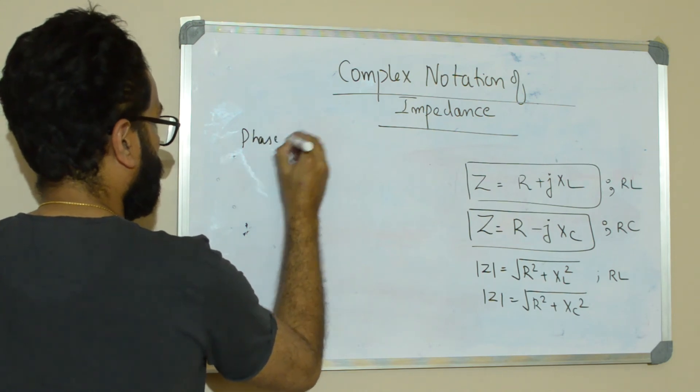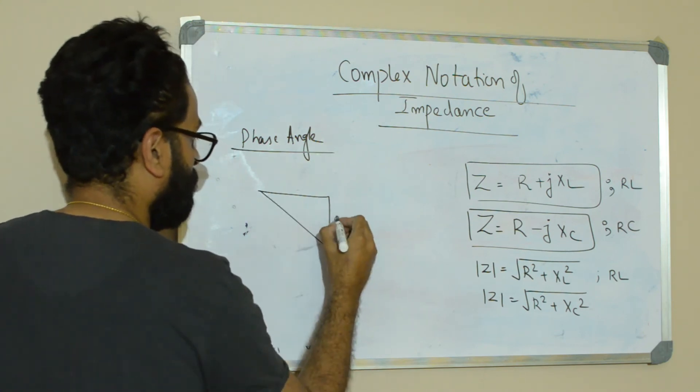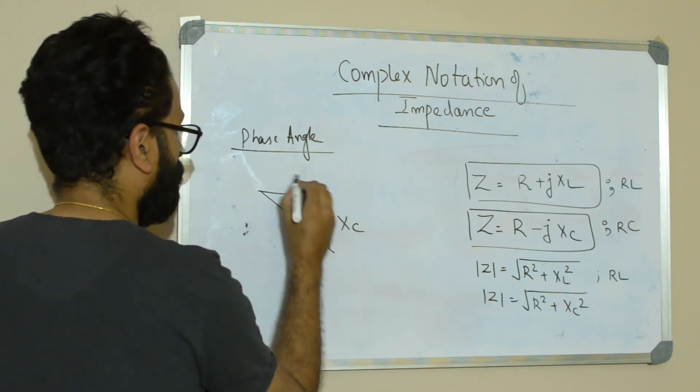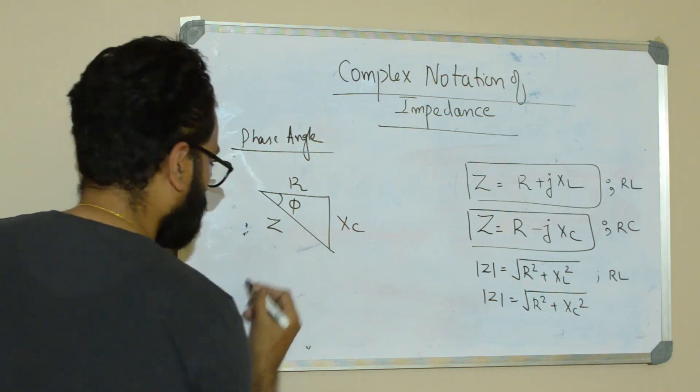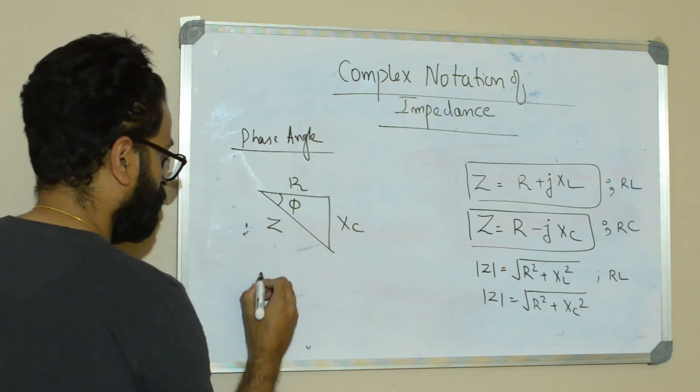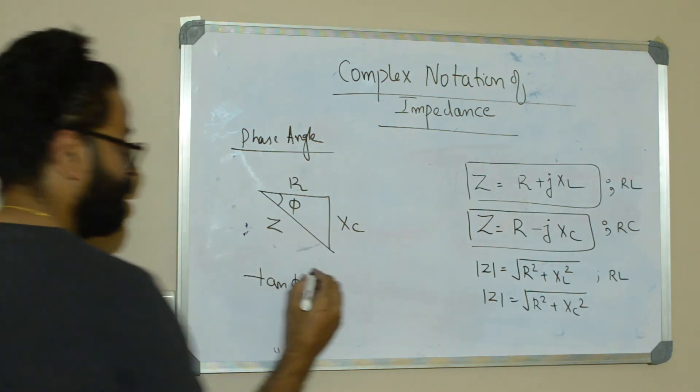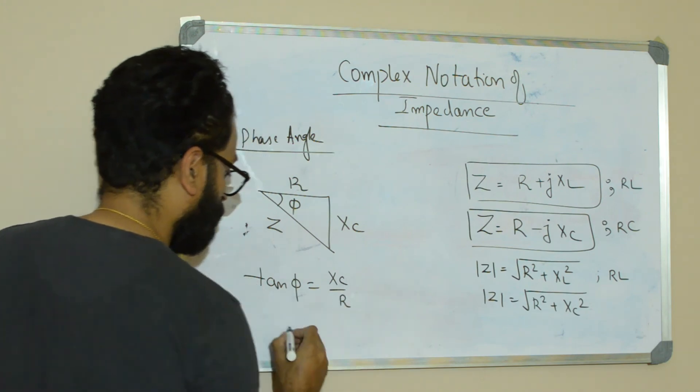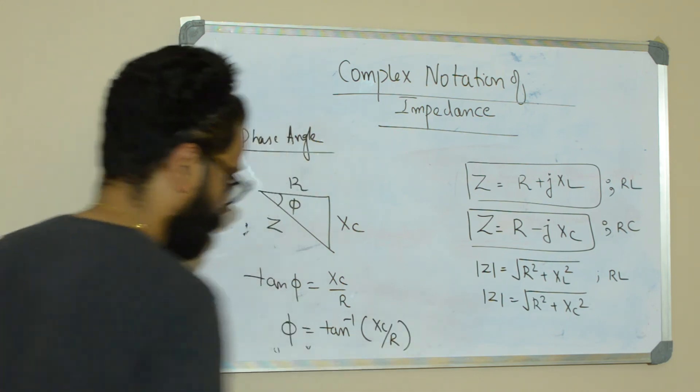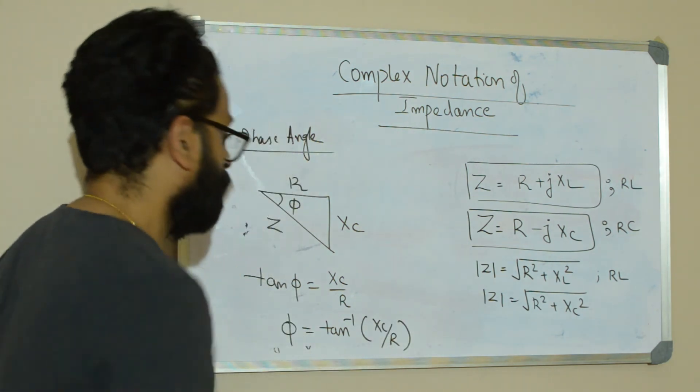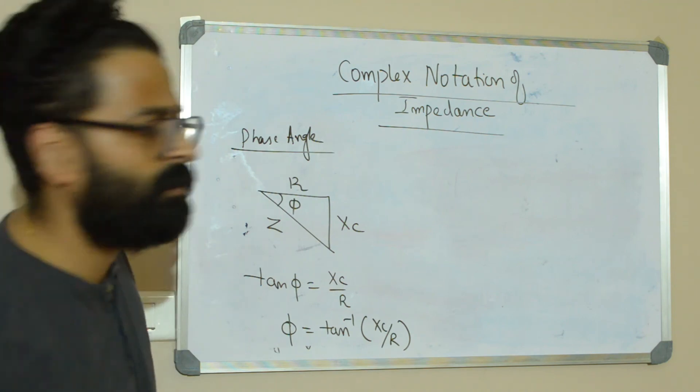Phase angle can be found from the right angle triangle. This is Xc, this is R, and this is Z, and this is phi. So you can apply the trigonometry to find out the phase angle. That is tan phi is equal to opposite by adjacent, that is Xc by R, or phi is equal to tan inverse of Xc by R.